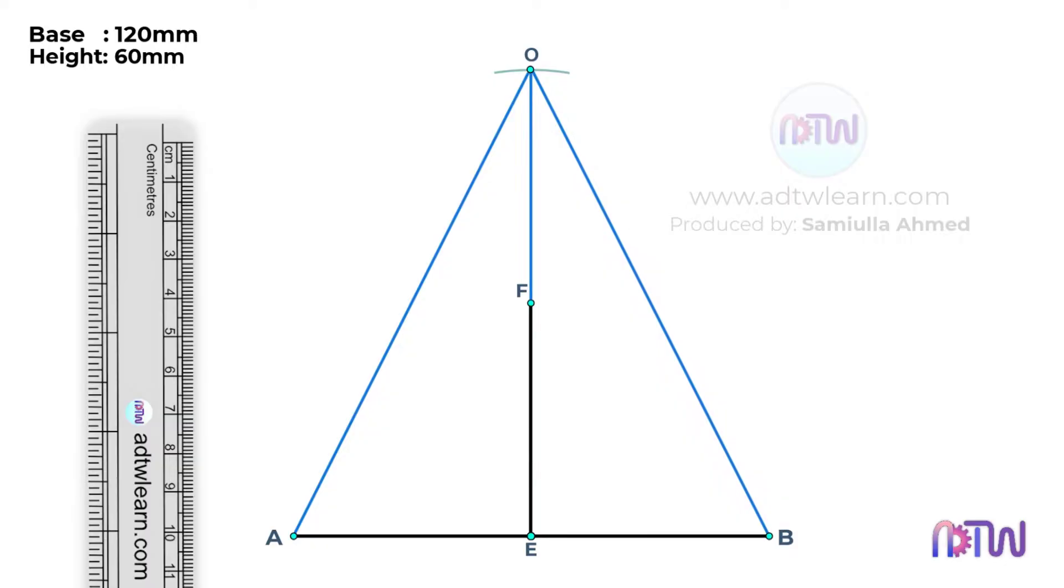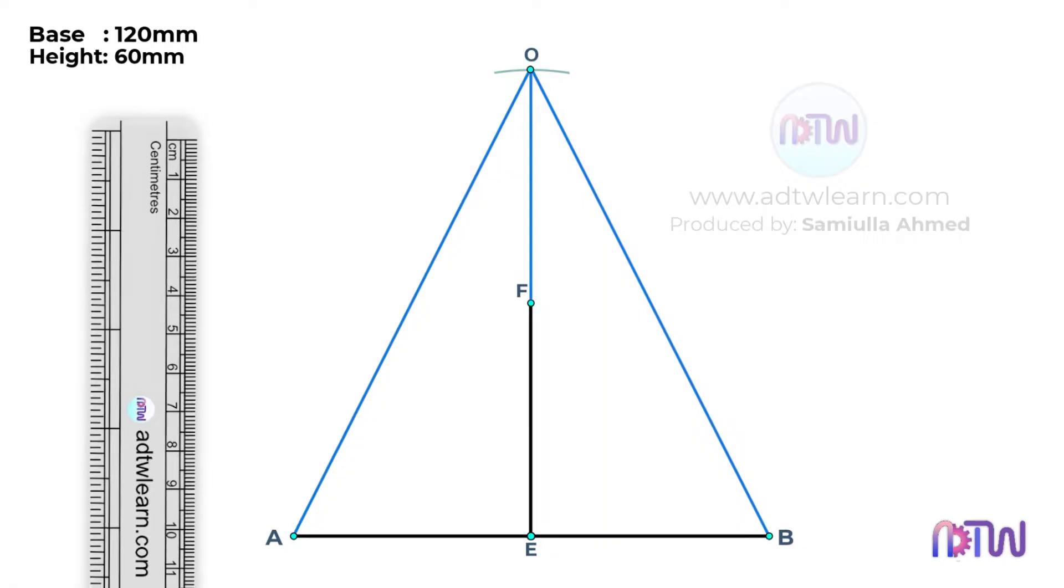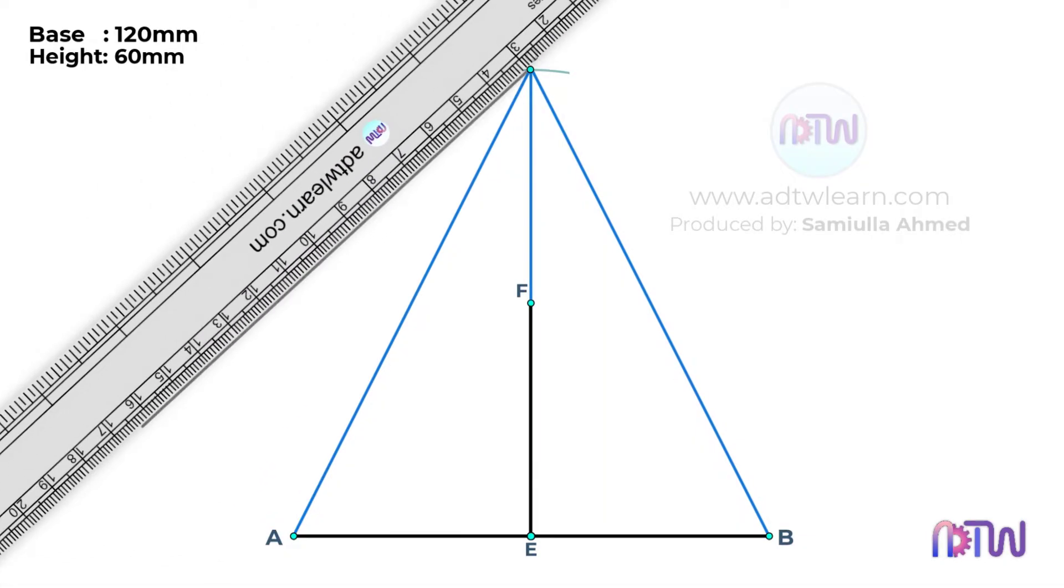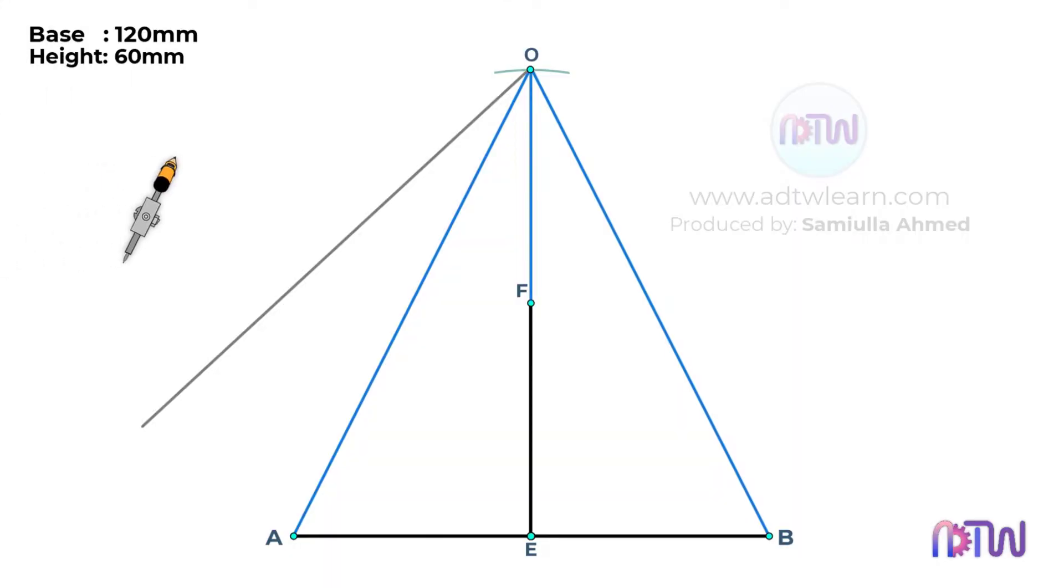To divide this line into 8 parts, we will draw an inclined line at point O. Next, we will take a compass and adjust it to some length, cutting 8 arcs on this inclined line as shown. Join this endpoint with point A.